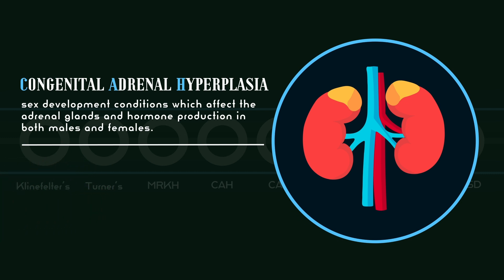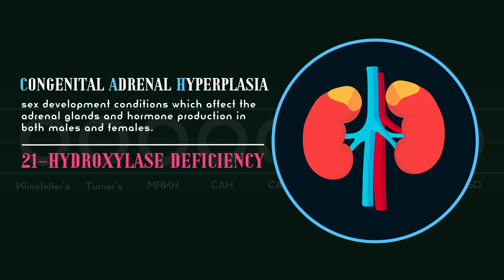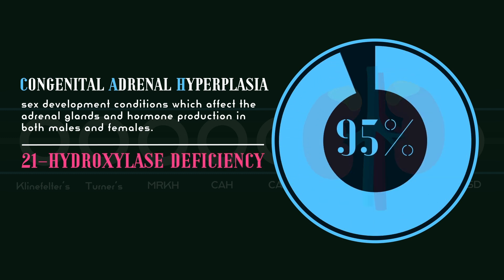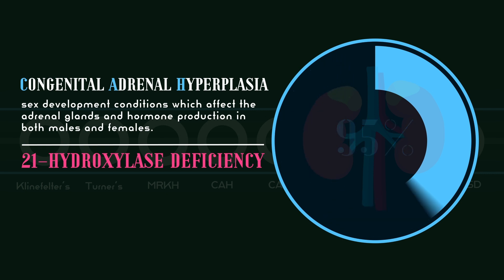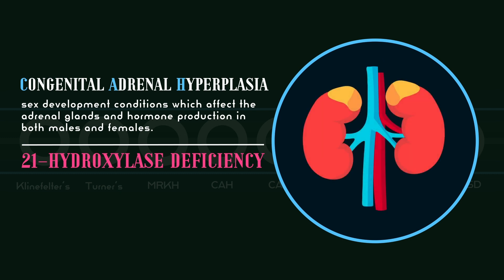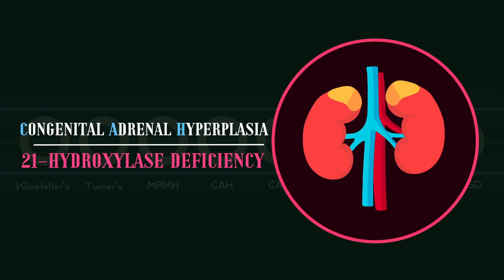The most common form is known as 21-hydroxylase deficiency, which makes up 95% of all cases of congenital adrenal hyperplasia. For the rest of the video, we will be exploring 21-hydroxylase deficiency in females, using the shorthand CAH.